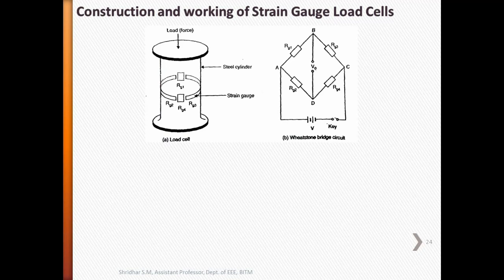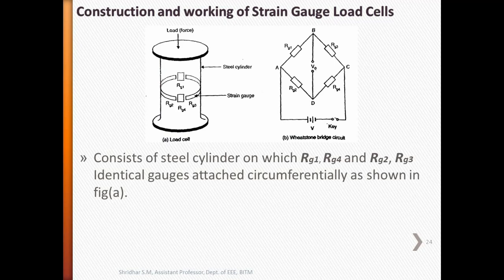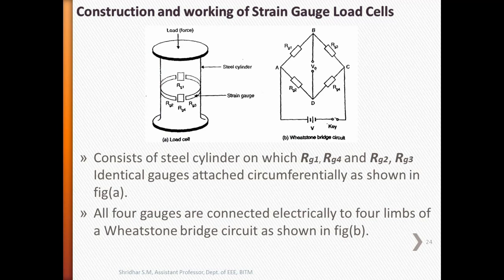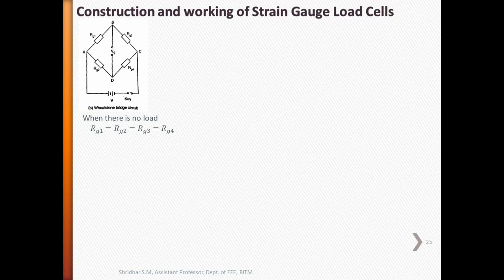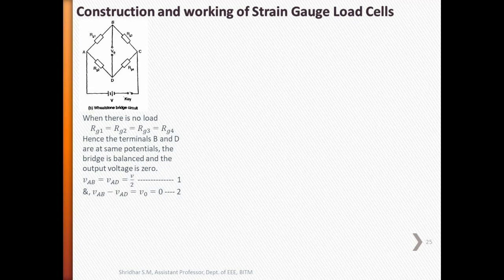Next, we'll discuss the construction and working of strain gauge load cells. A diagram shows a simple strain gauge load cell consists of steel cylinder on which four identical strain gauges are mounted, RG1 to RG4. All four gauges are connected electrically to four limbs of a Wheatstone bridge, which is shown in figure B. When there is no load on the cell, all four gauges have same resistance: RG1 = RG2 = RG3 = RG4. Obviously, the terminals B and D are at same potential. The bridge is balanced and the output voltage is 0, which can be given by equations 1 and 2.